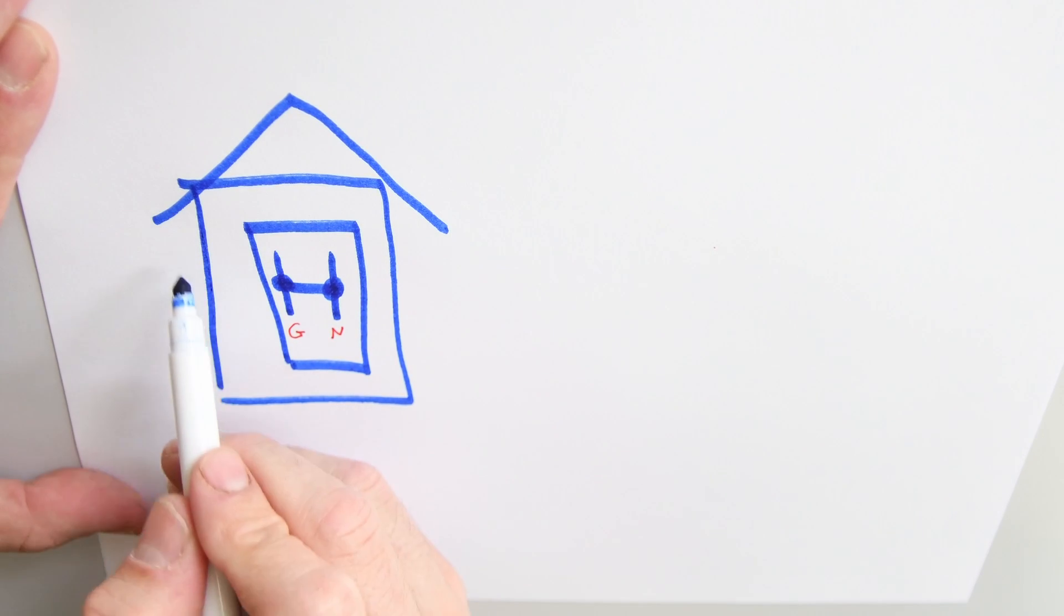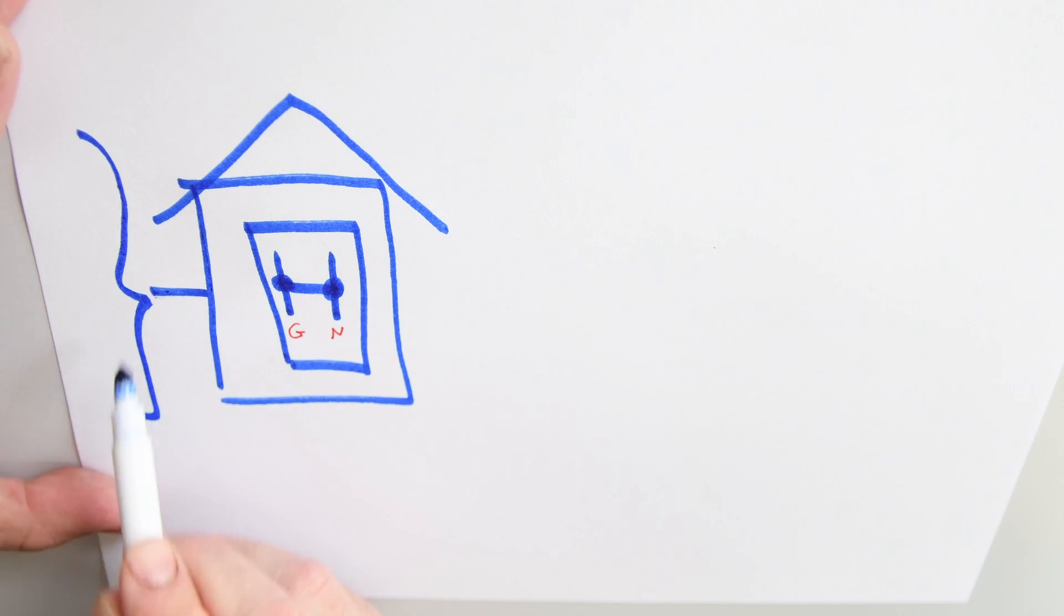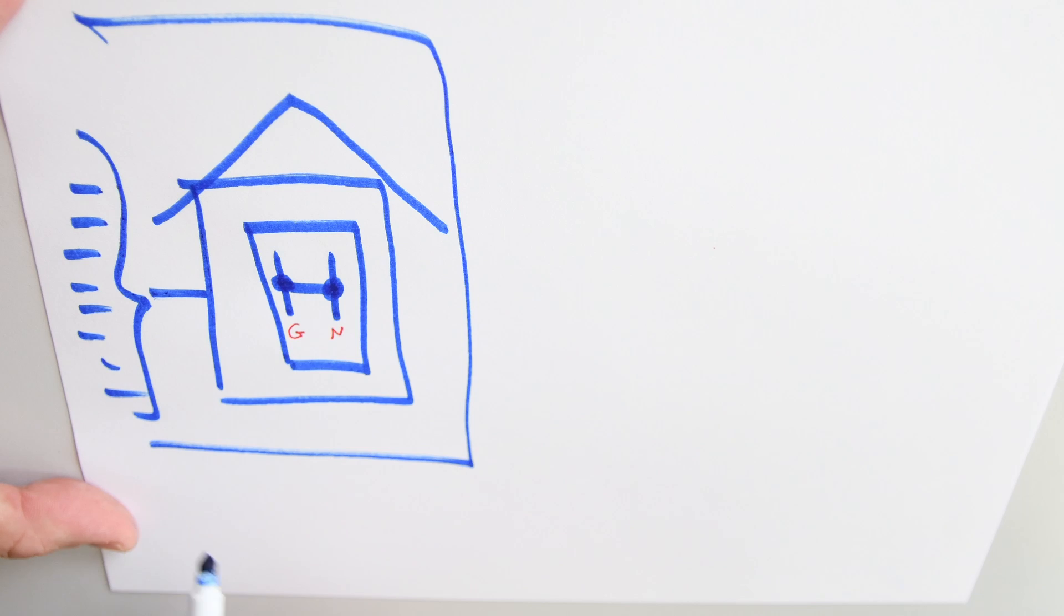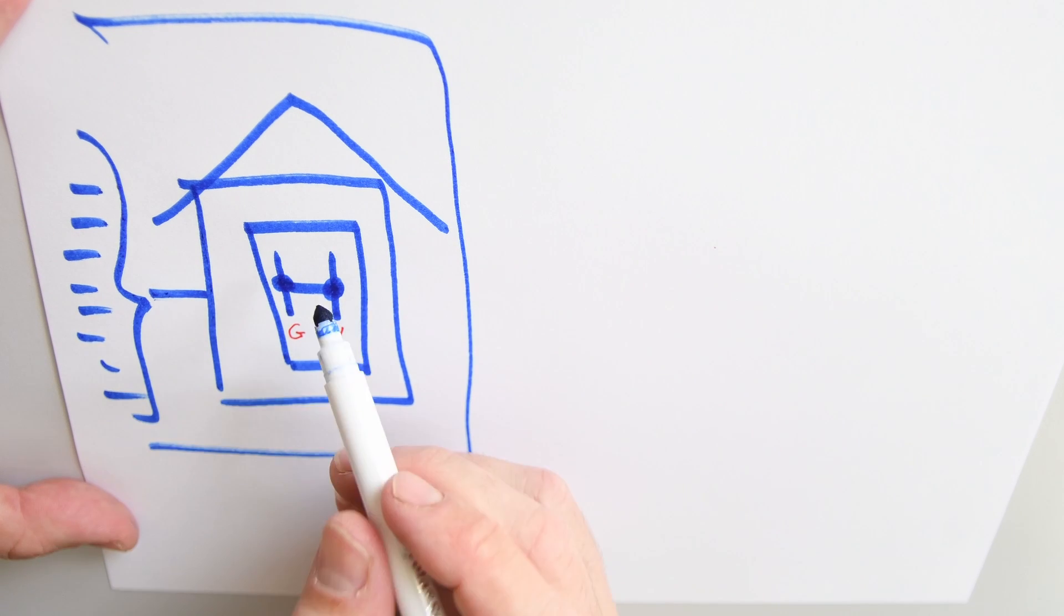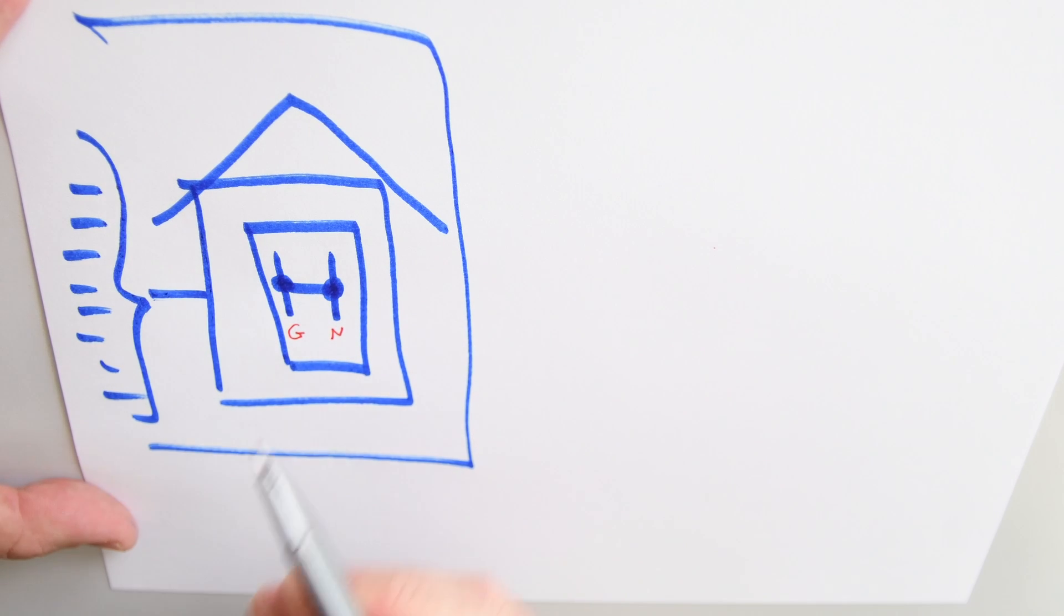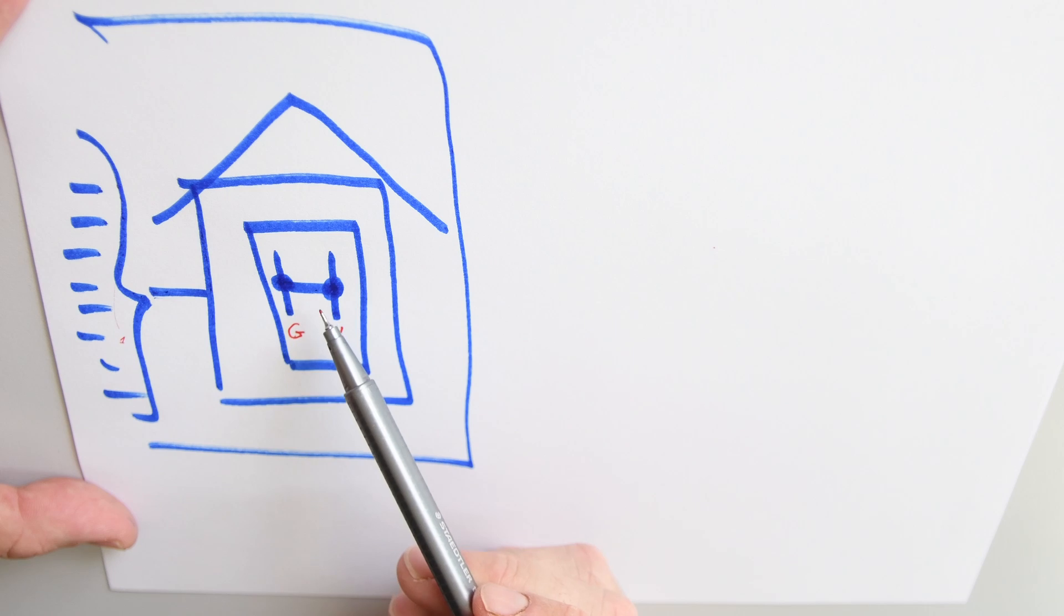So anything that we connect in this system, which is all the appliances inside the house, is going to be complying with the National Electrical Code because there is only one point in which the ground is connected to the neutral. That connection is not happening on any of the appliances, but only here in the breaker panel.